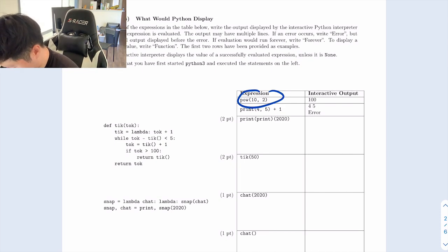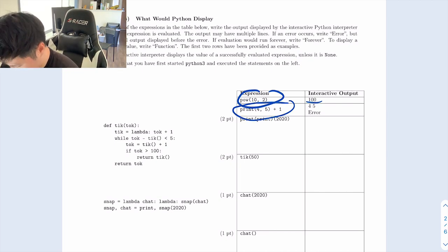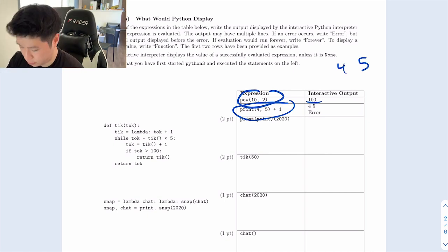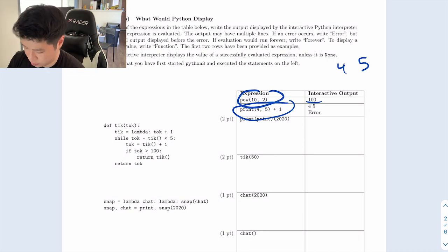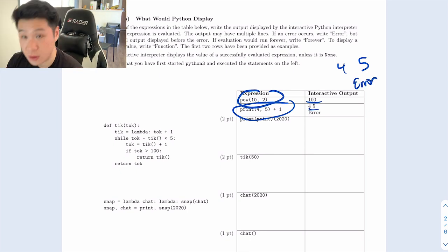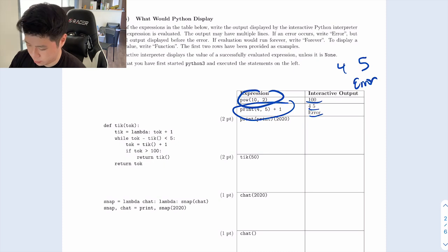For the first example, 10 ** 2 means 10 to the power of 2, so you get 100. Next: print(4, 5) + 1 — reading left to right, you evaluate the print function, so you see 4 and 5. Then the plus 1 — you can't add 1 to a print statement, so you get an error on the second line.